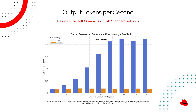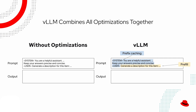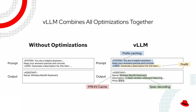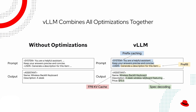A huge leap forward for real-world workloads. It supports cutting-edge model optimizations like quantization of weights, activations, and even KV cache, speculative decoding, tensor, pipeline, expert, and even data parallelism, flash attention, flash-infer kernels, chunked pre-fill, and automatic prefix caching.